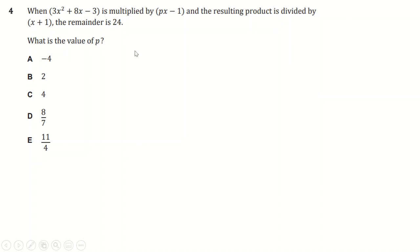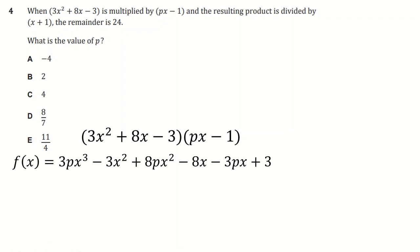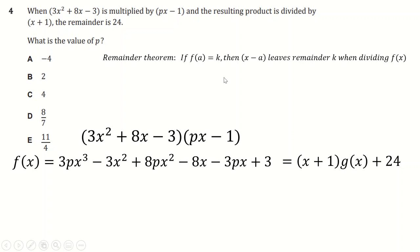Question four involves the remainder theorem. I'll call it f(x). When the polynomial is divided by a factor, the remainder is 24. The remainder theorem states: if f(a) = k, then dividing f(x) by (x − a) leaves a remainder of k. This is the general case of the factor theorem — if f(a) = 0 it's a pure factor, otherwise whatever you evaluate f at is the remainder.